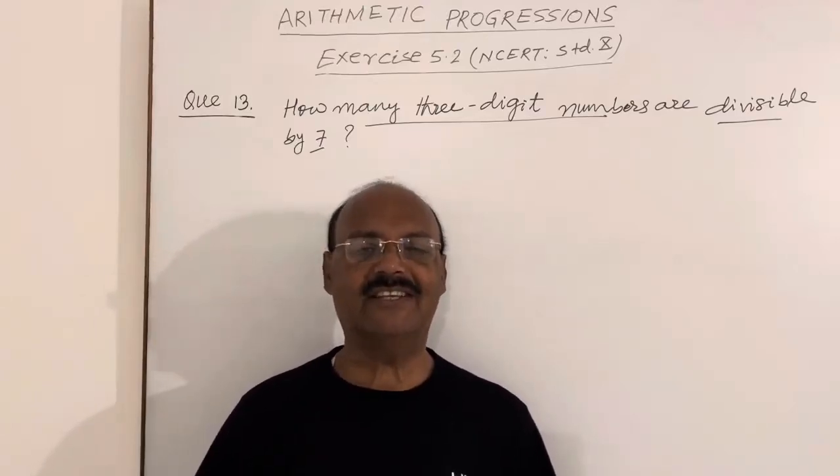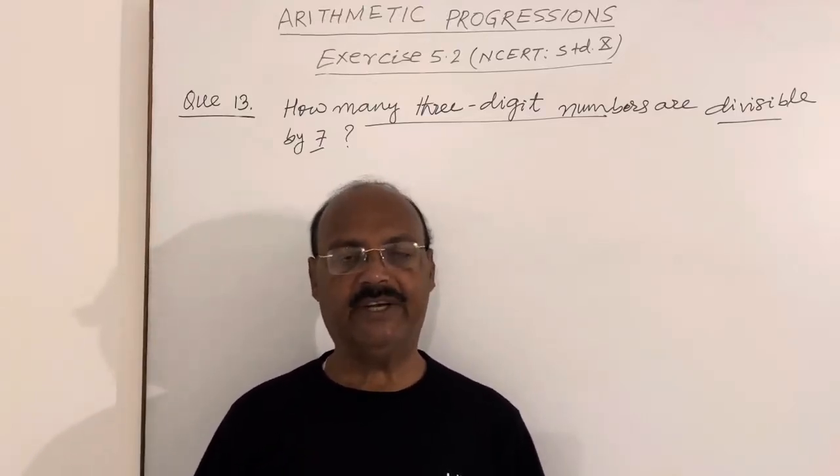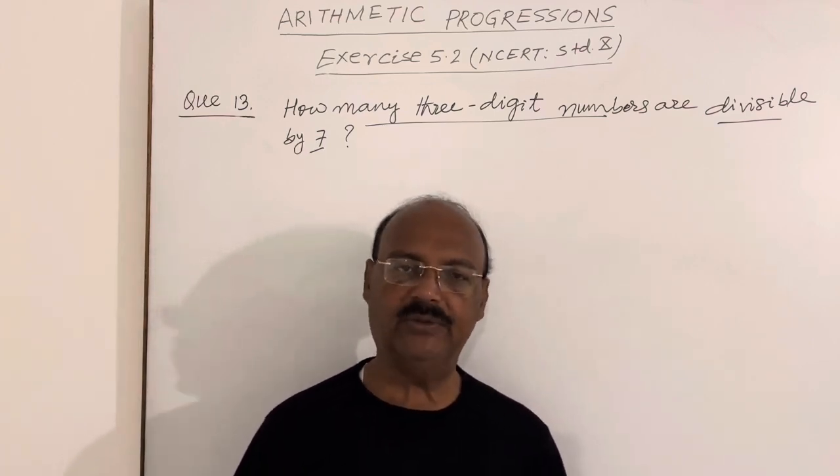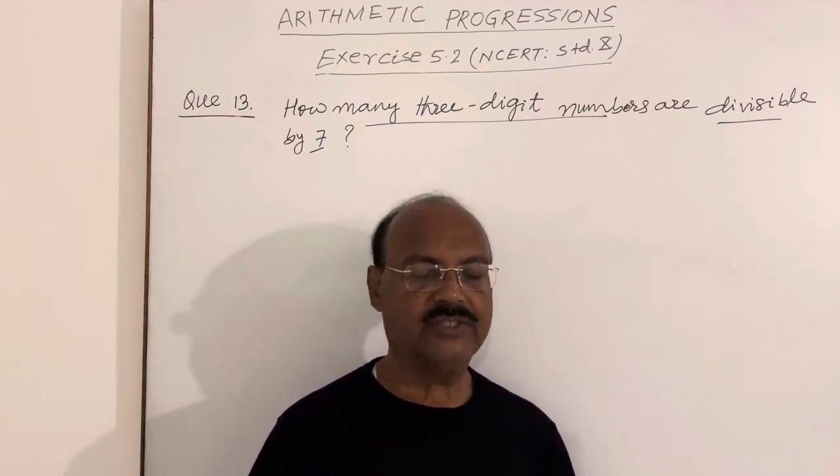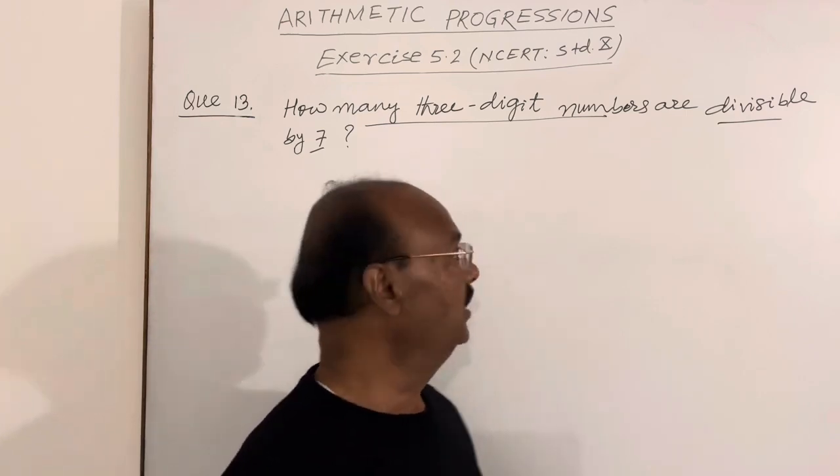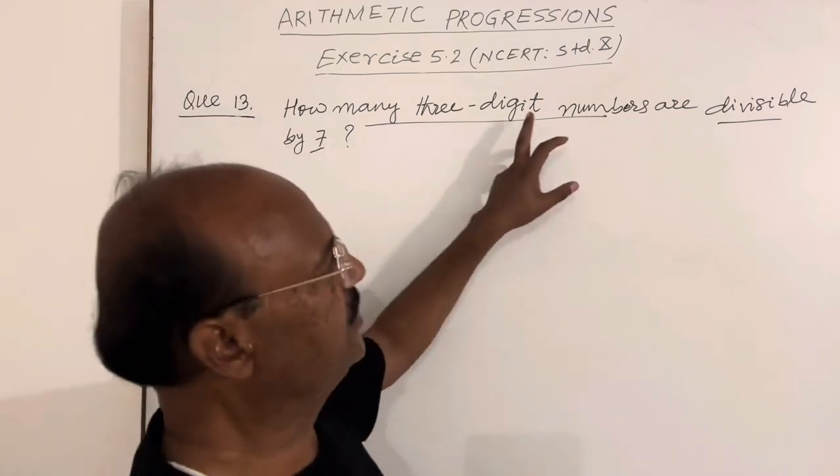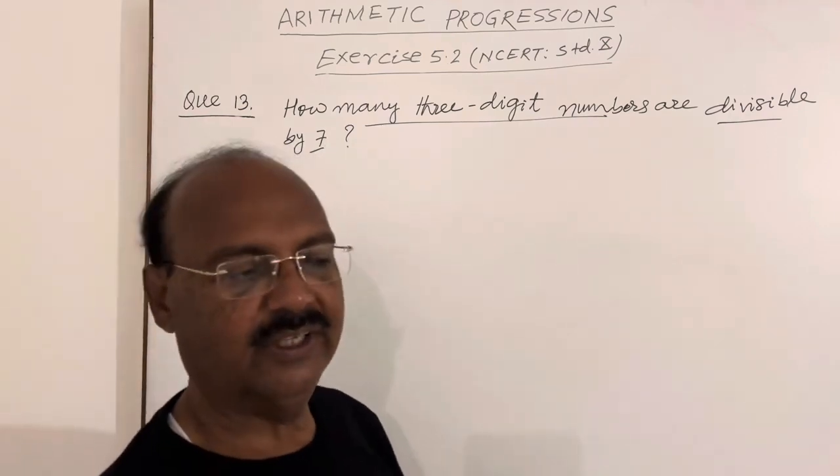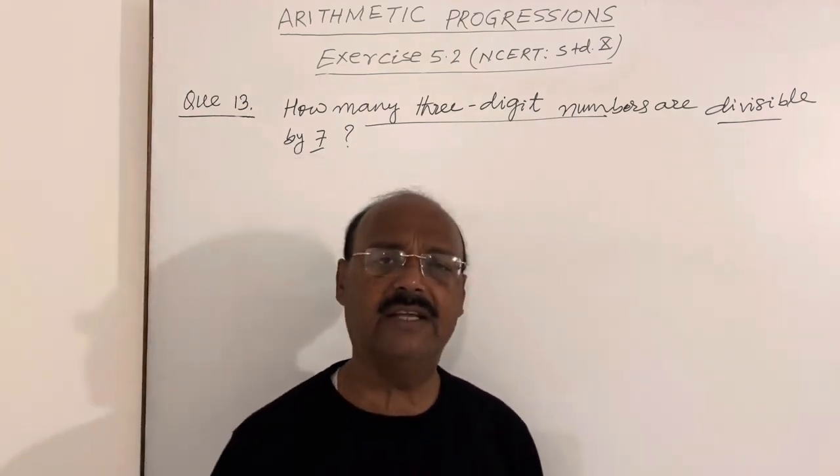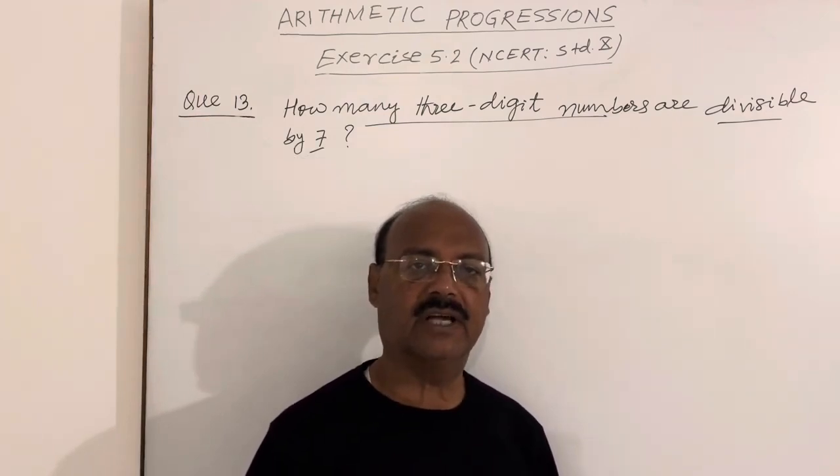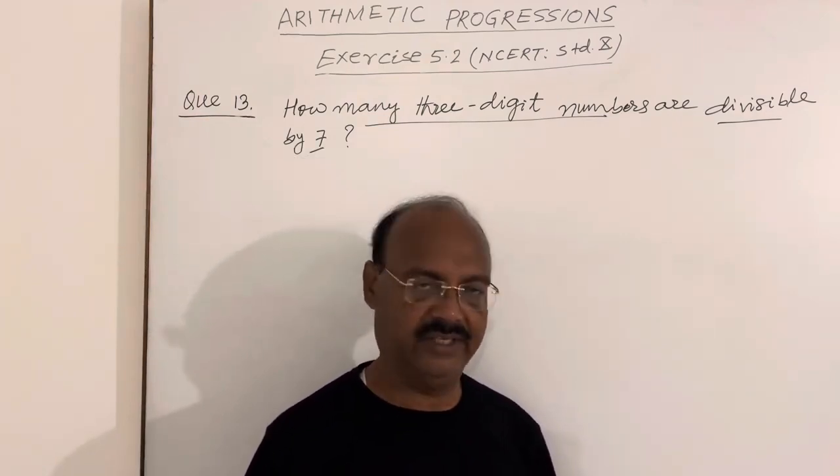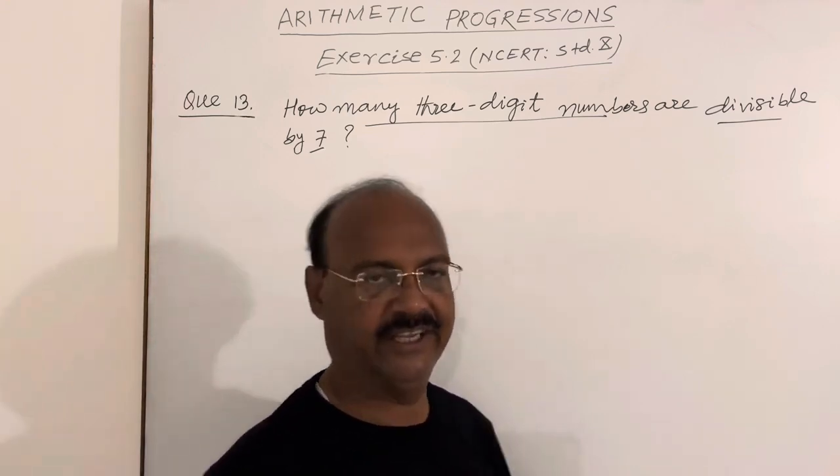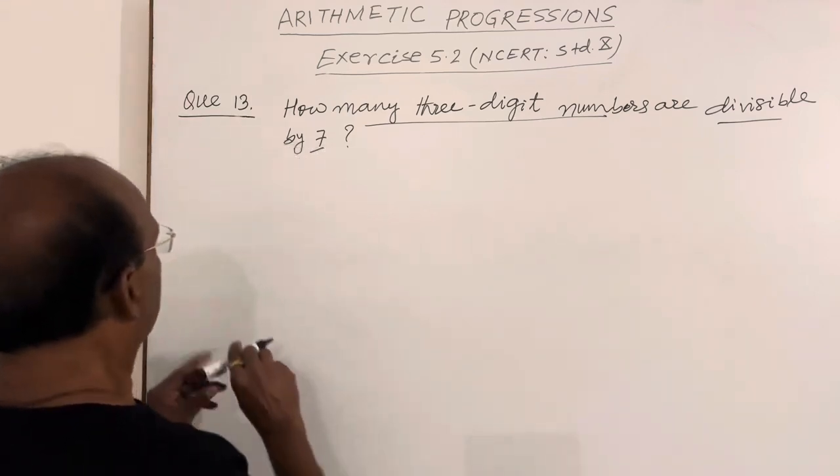Welcome students, let us see a very interesting question from the chapter arithmetic progressions. This is question number 13 from exercise 5.2 of NCERT book. The question is: how many three-digit numbers are divisible by seven? As you know, three-digit numbers start from 100 and end at 999. Let us see the solution here.